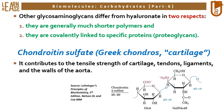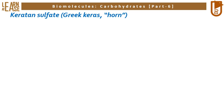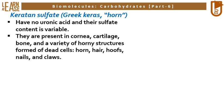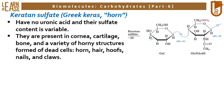Keratan sulfate derives its name from the Greek word keras, meaning horn. Keratan sulfate has no uronic acid and its sulfate content is variable. It is present in the cornea, cartilage, bone, and a variety of horny structures formed of dead cells: horn, hair, hooves, nails, and claws. Its structure is composed of two different monosaccharides: galactose and N-acetylglucosamine with sulfate on its sixth carbon.